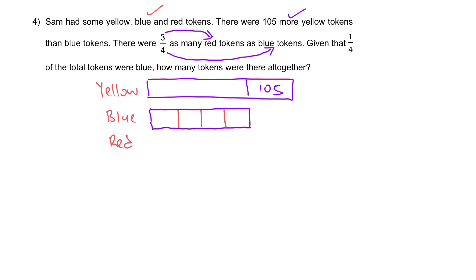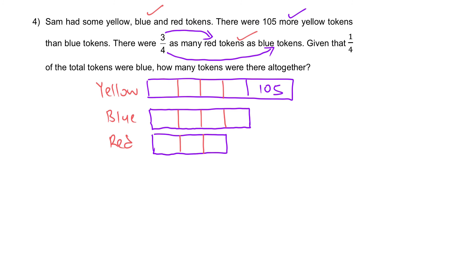Let's partition blue into four parts so we can draw red as three units. For yellow, we do the same partitioning to have equal units for comparison. Given that a quarter of the total tokens were blue, this four units represents a quarter of the total.